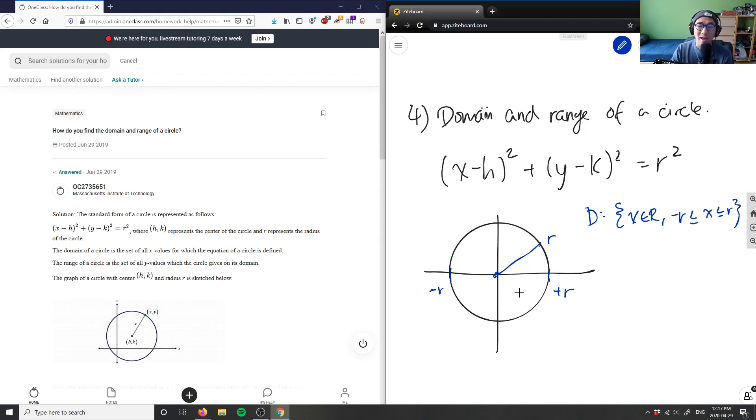And this here would be my restrictions for my x values here. And the exact same thing for my y values, my y values are also restricted here. As you can see I can draw a line from here to here and this would be my y value here, but this is also r and this here is also negative r.